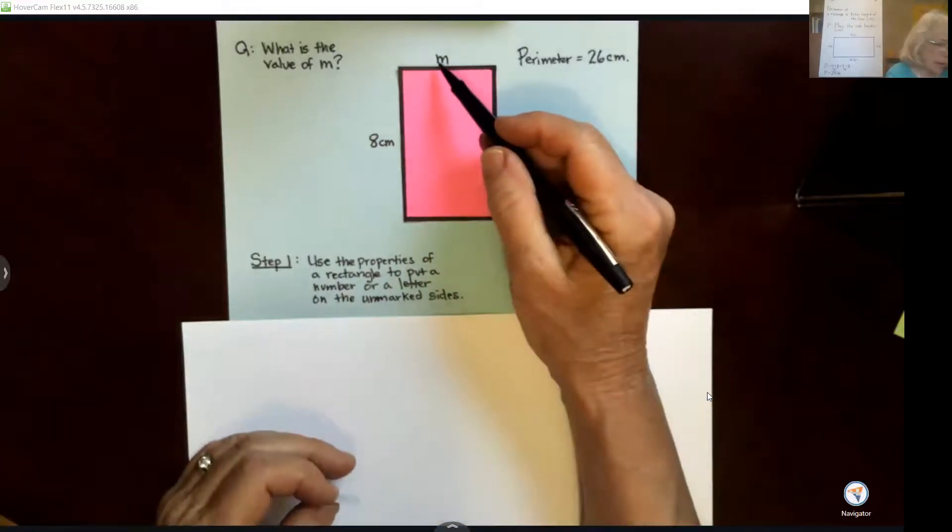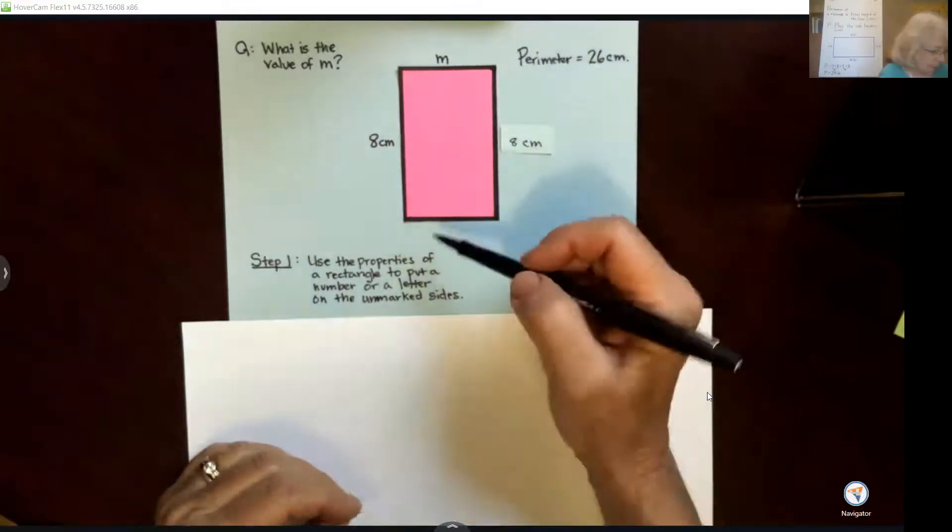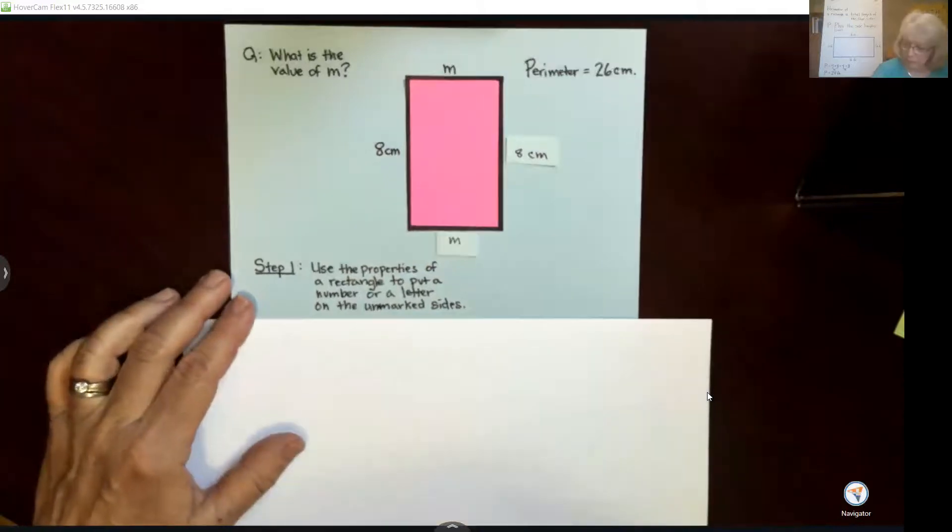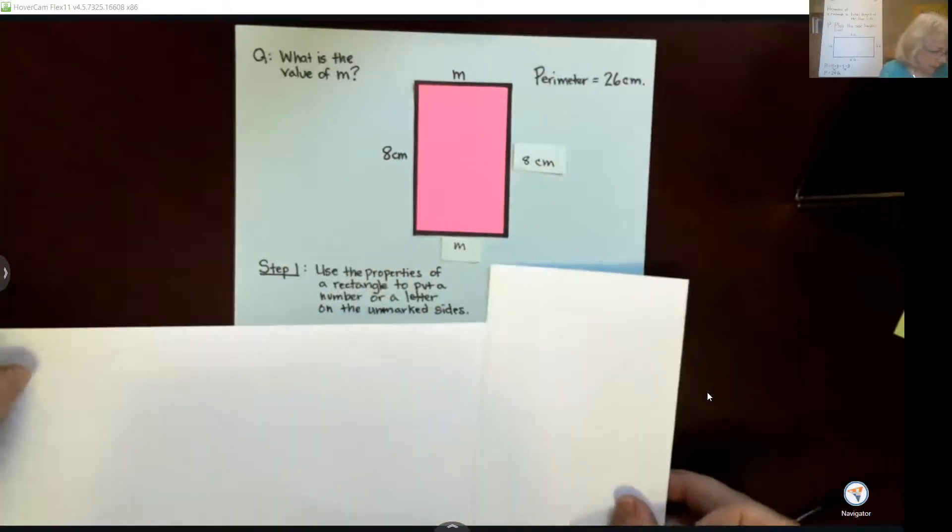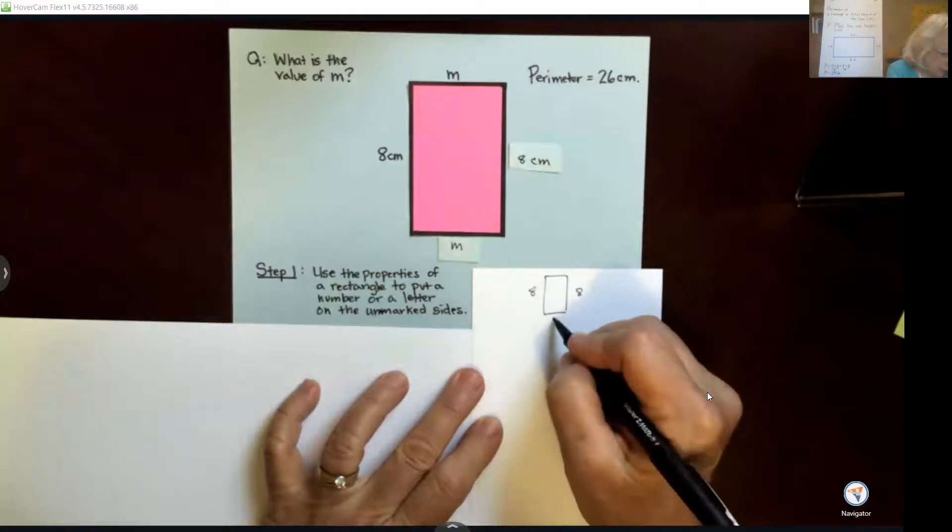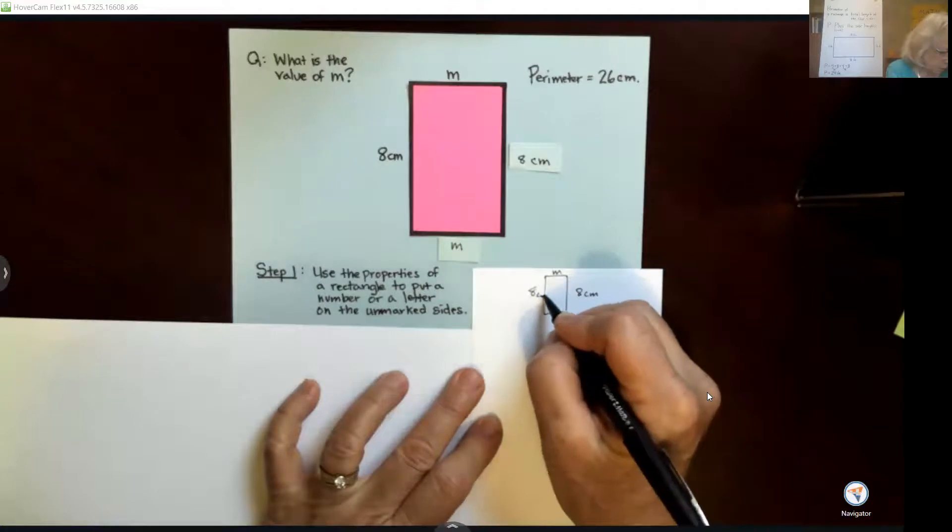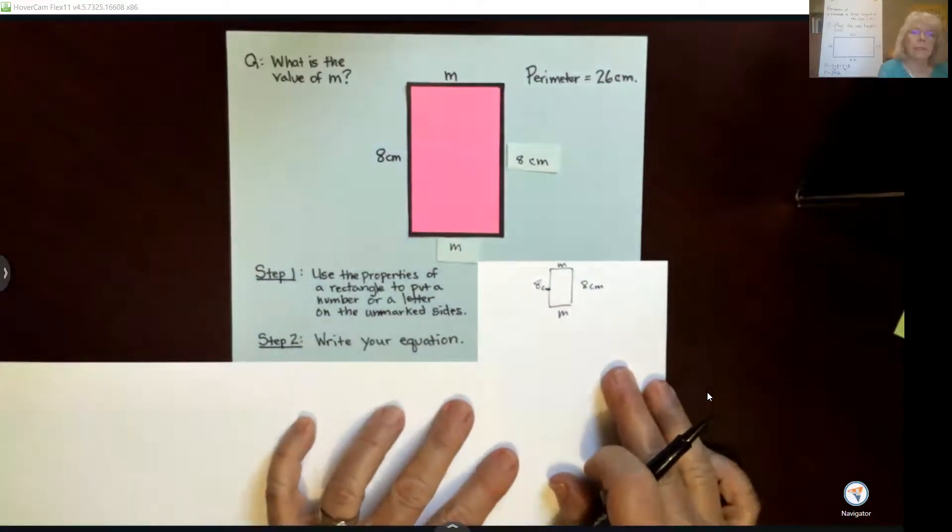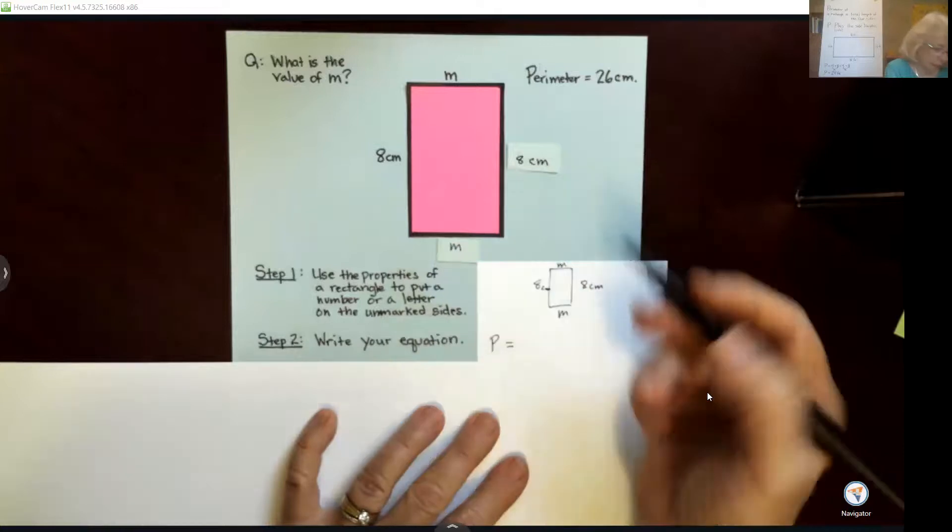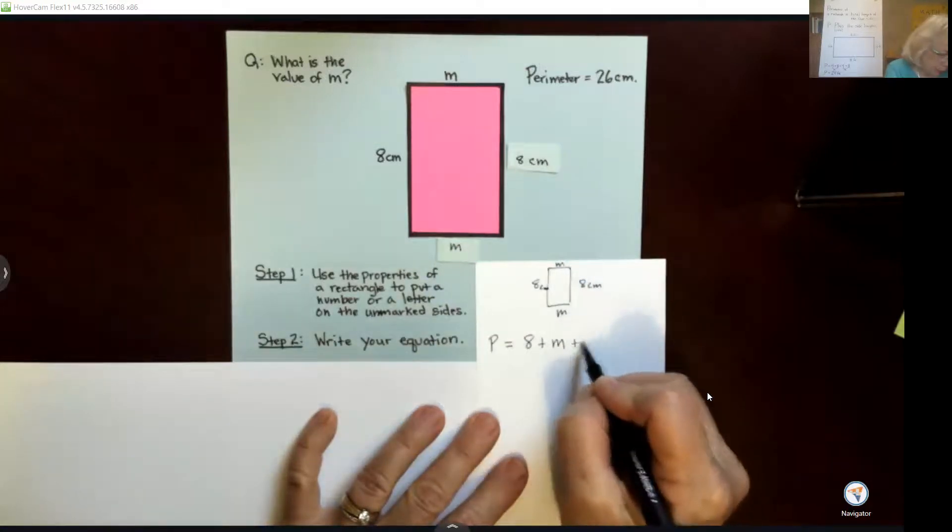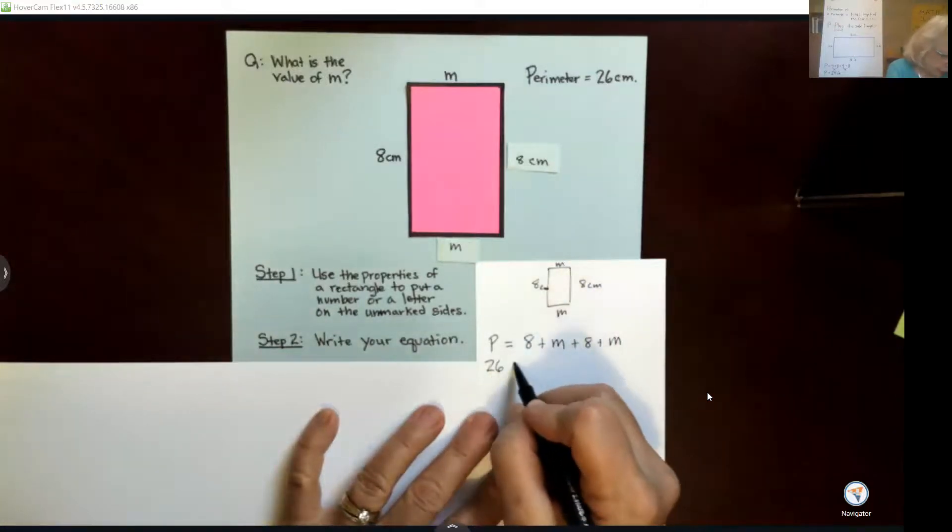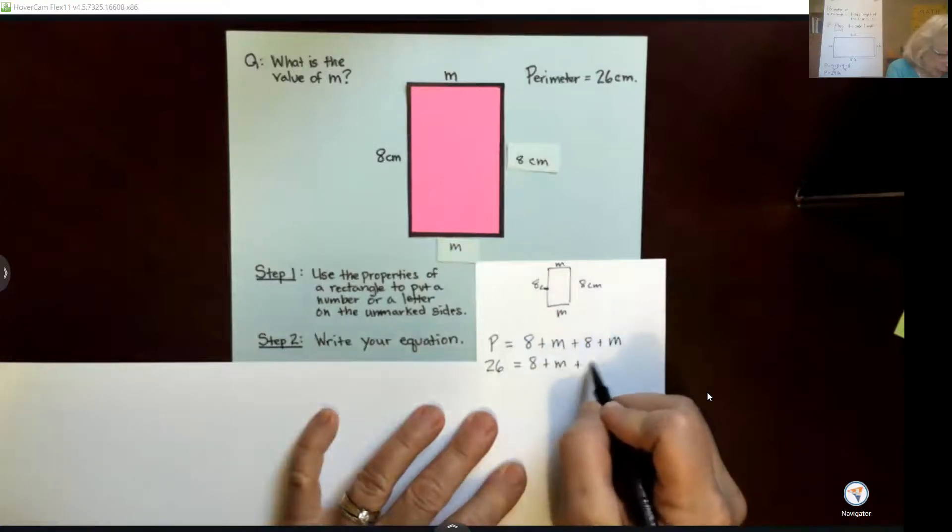Okay, same way. If this is m, whatever the value of m is, that means the opposite side has to be exactly the same. So we're just going to call it m also. All right, so I'll do this over here on this side as well. So I have my rectangle here with my two 8's and my two m's, that's in centimeters, and now I'm going to write my equation. So my equation is P, perimeter, equals I'm going to add up the sides. Let's say I start here. So I say 8 plus m plus 8 plus m, and I know my perimeter which is 26 centimeters, so I'm going to put that in for P. 26 equals 8 plus m plus 8 plus m.